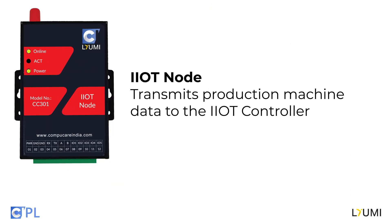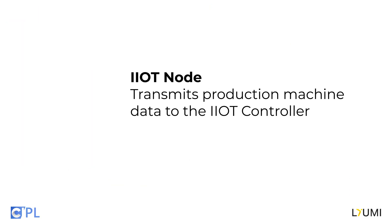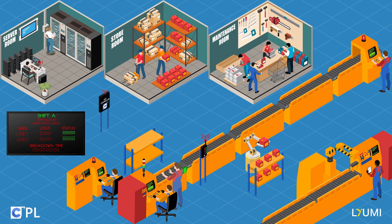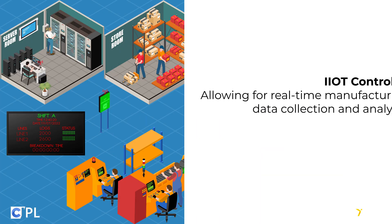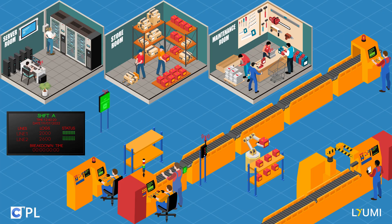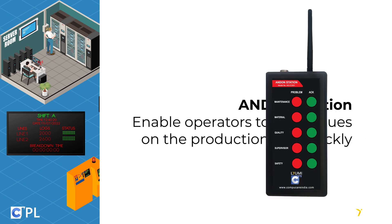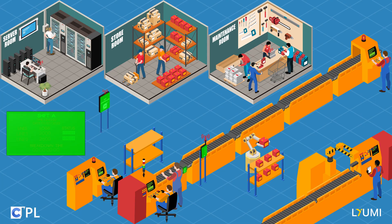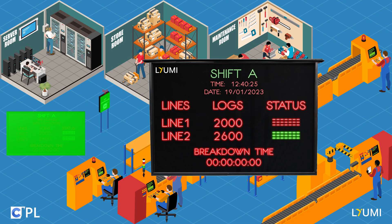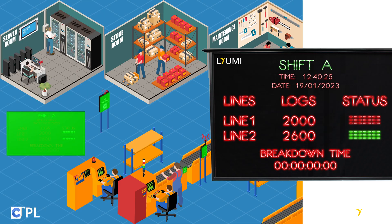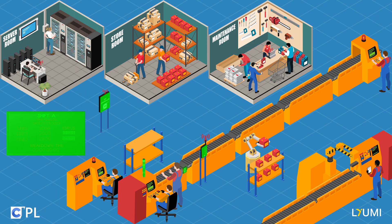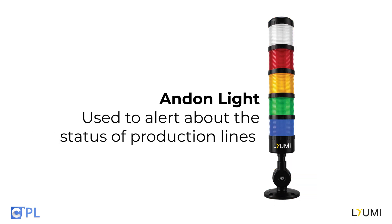The system consists of several key components: the I-IoT node, I-IoT controller, Undawn station, LED display, and Undawn light.